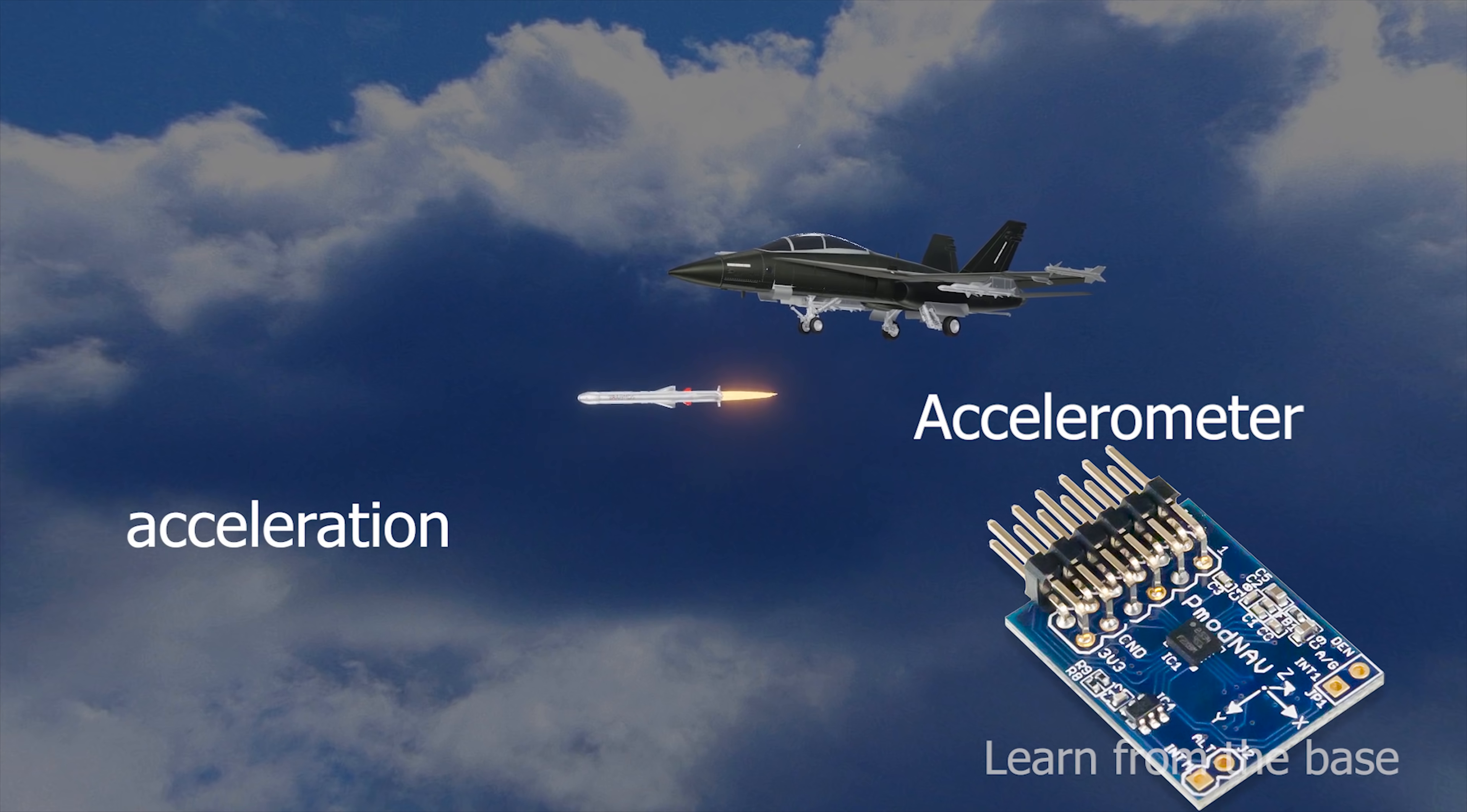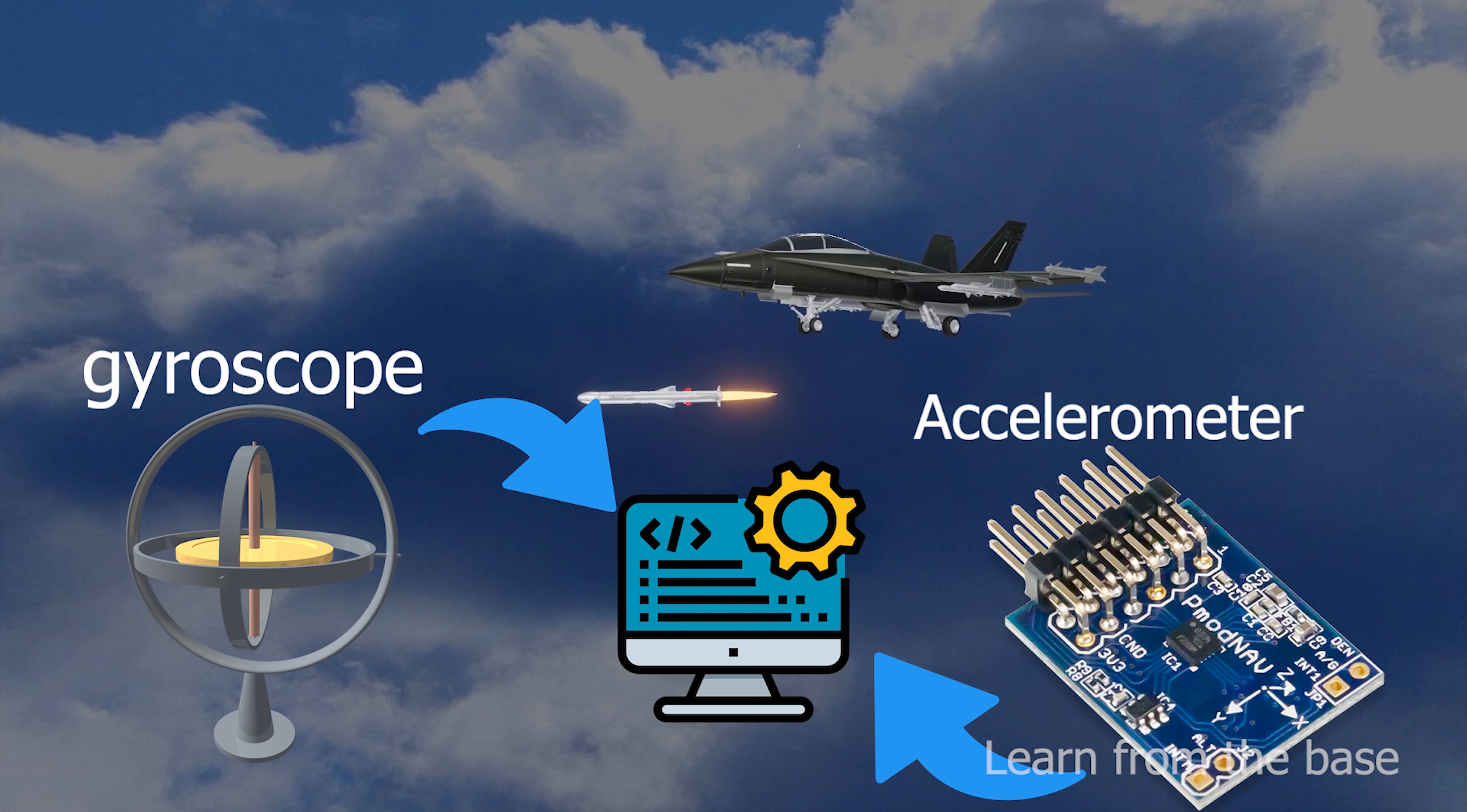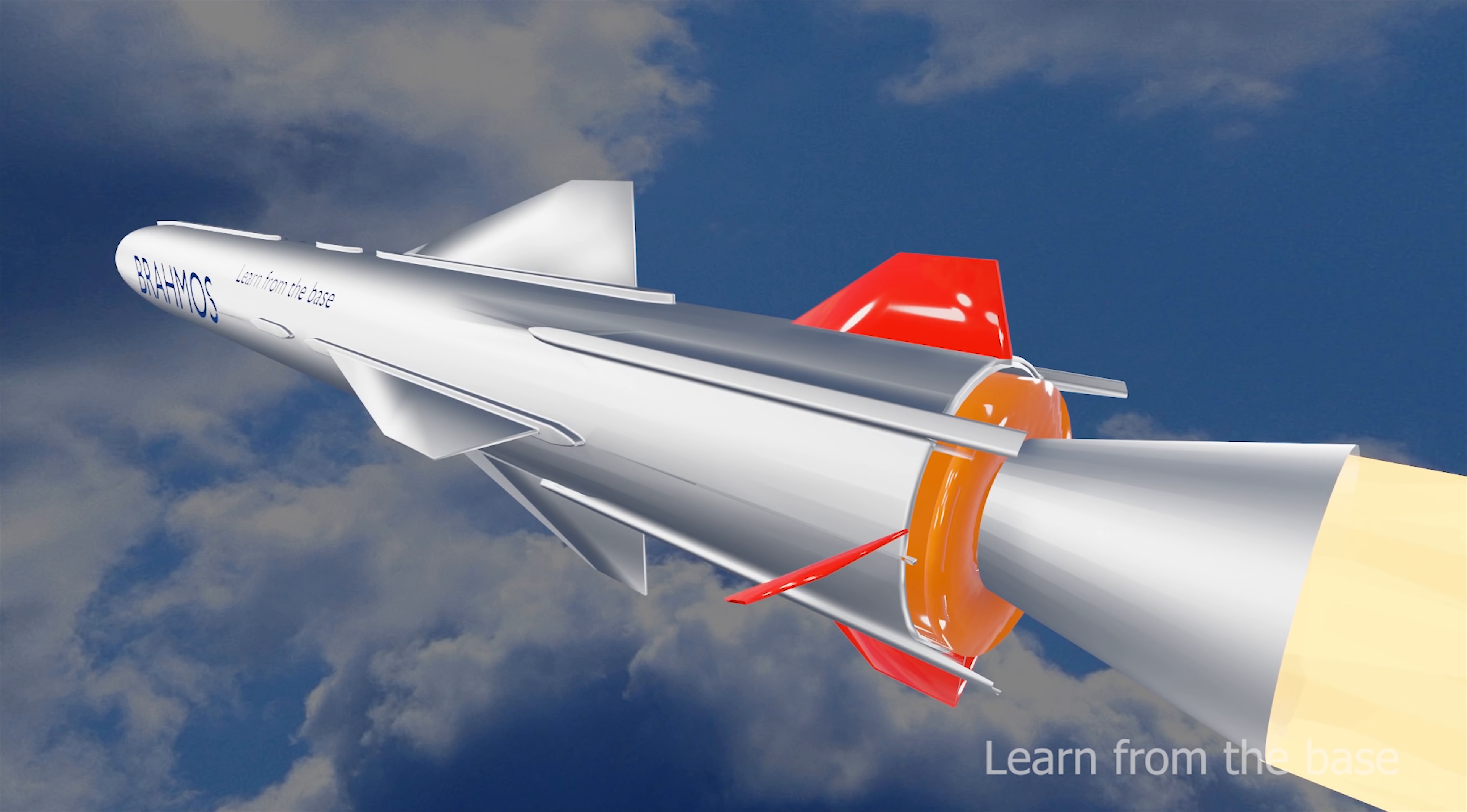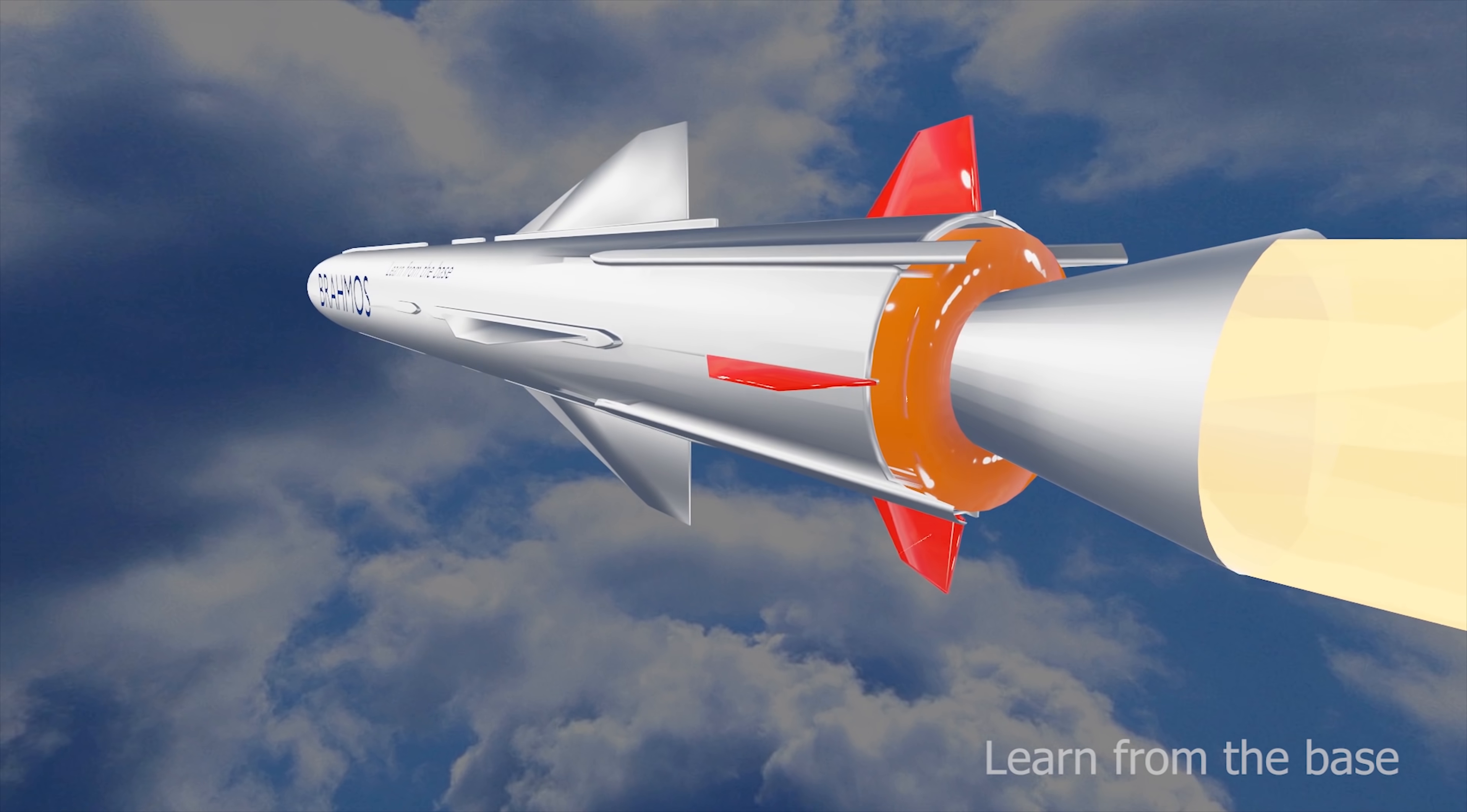And there are three accelerometer sensors for measuring the proper acceleration of the missile. Then all this information is sent into an autopilot computer, and the computer sends the commands to the guidance electronics. The guidance electronics use the aerodynamic surfaces to steer the missile with the help of fins.